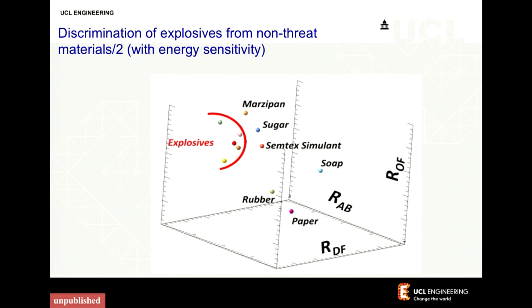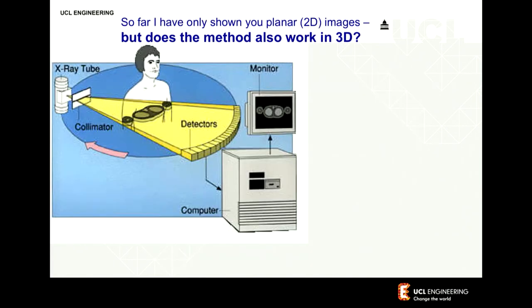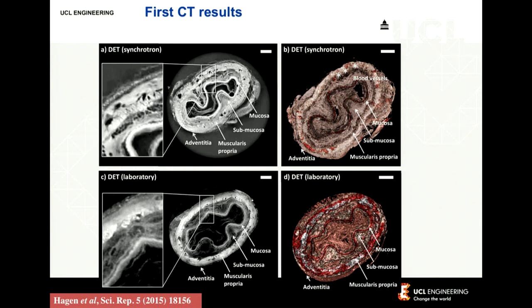What I've shown you so far was planar 2D images, but the same applies to 3D imaging or computed tomography. One of the early images shows an esophagus where we really resolve the different soft tissues from one another — something that could never be done with x-rays before and people use MRI for instead. We can perfectly separate the different types of tissues inside a human organ. This is the gold standard done on the synchrotron, and we've repeated the experiment in the lab — the image quality is not exactly the same, but we still recognize all the tissues we need to recognize.